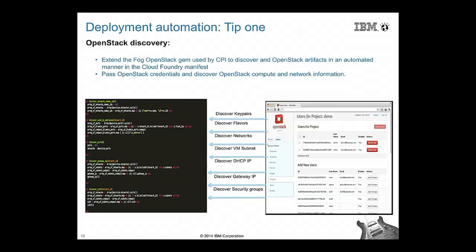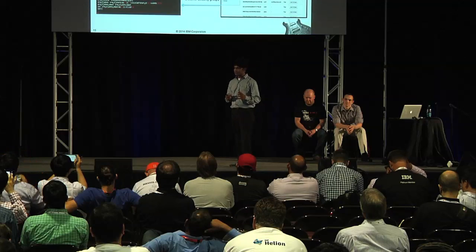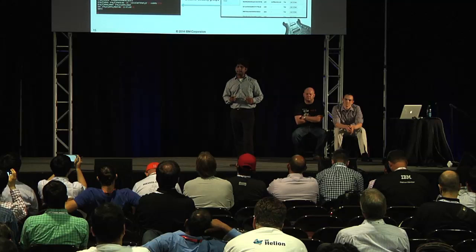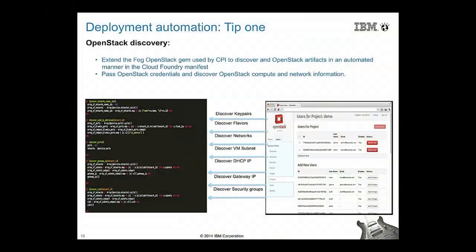On the automation side, we extended the fog gem, which the OpenStack CPI uses, to discover a lot of information from OpenStack. Rather than manually digging through config files or APIs, we wrote automation code to discover key pairs, flavors, VM subnet, DHCP server location, DNS server location, and used IP addresses — all the information we need to tell Bosh.